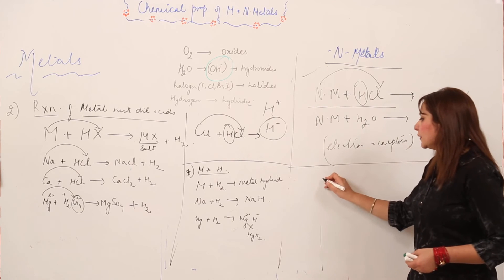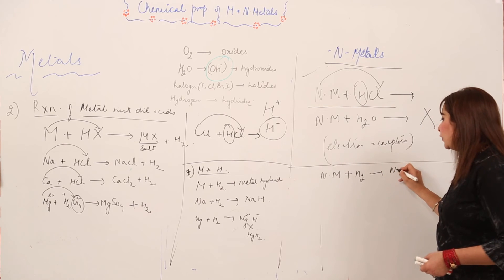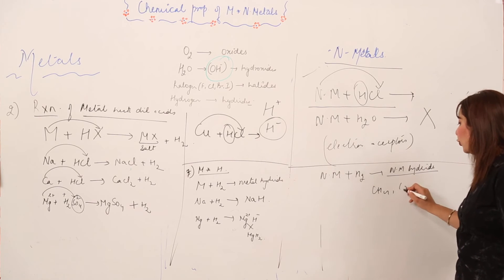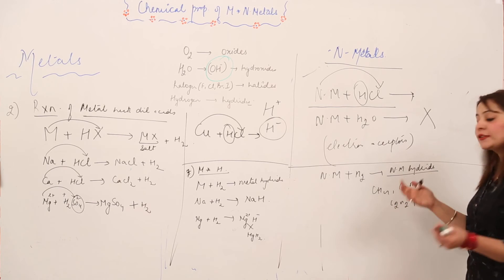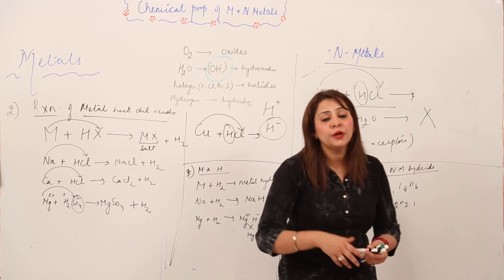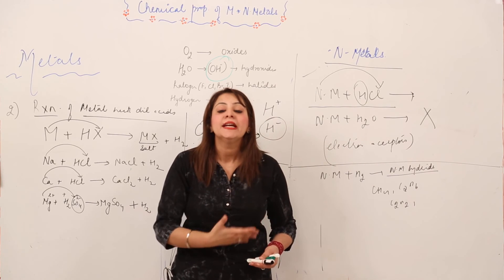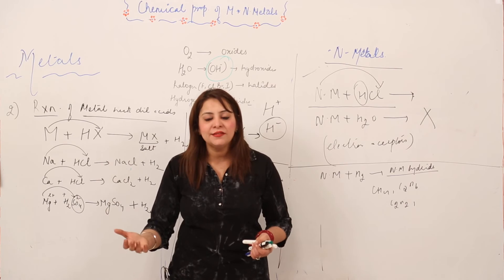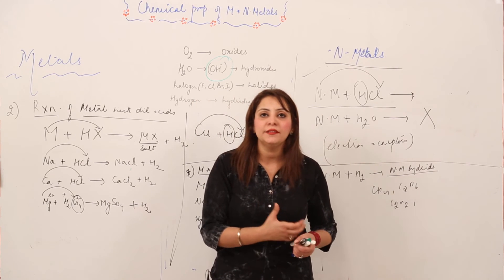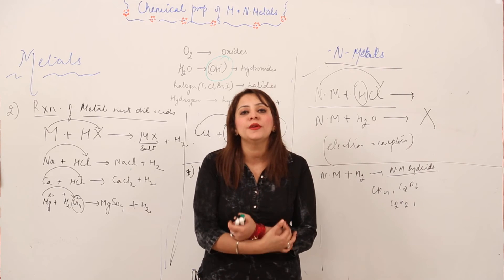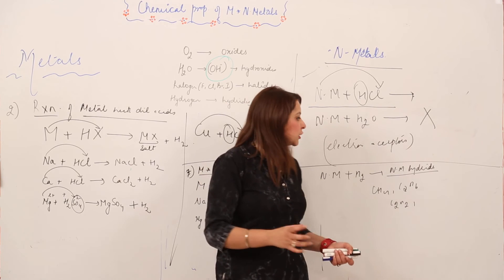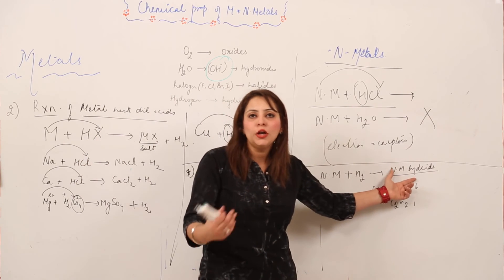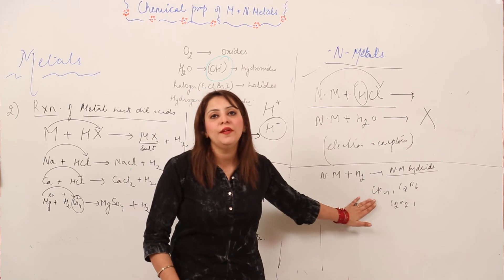When non-metals combine with hydrogen, they form non-metal hydrides. For example, carbon forms many hydrocarbons: CH4, C2H6, C2H2, and so many others. The nature of these hydrides is typically covalent hydride — sharing of electrons occurs because hydrogen is electronegative and non-metals are also electronegative. Electronegative combined with electronegative leads to formation of a covalent bond — the sharing of electrons. So metals form ionic hydrides and non-metals form covalent hydrides.